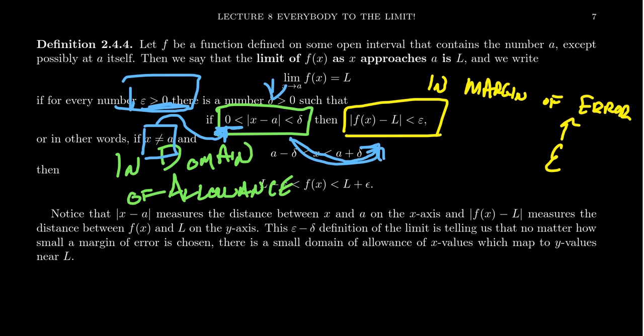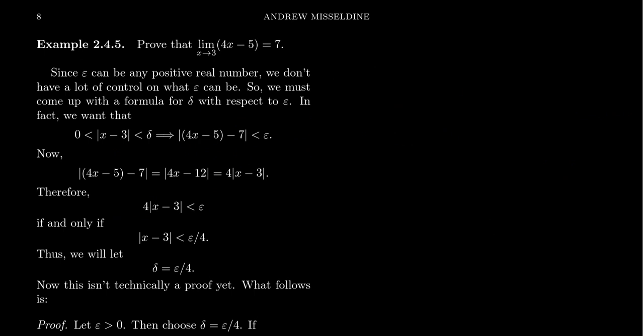And so I want to show you an example of how one actually can compute a limit using the precise definition of the limit here. So in the remainder of this video, we're going to prove the statement, the limit as x approaches 3 of the function 4x minus 5 is equal to 7. So what that means is that if you give me any amount of error, you're going to give me some error. It doesn't matter what it is, as long as it's positive.